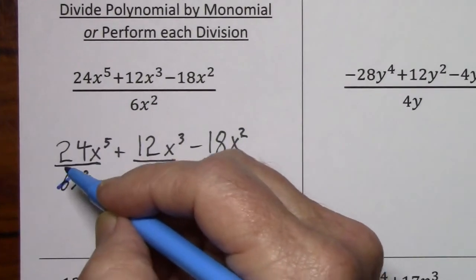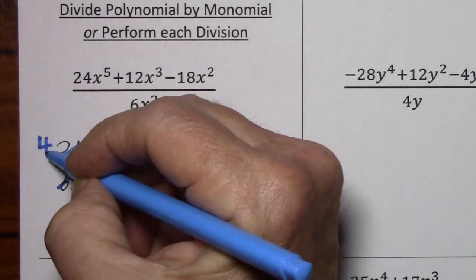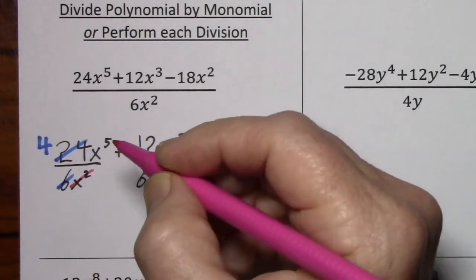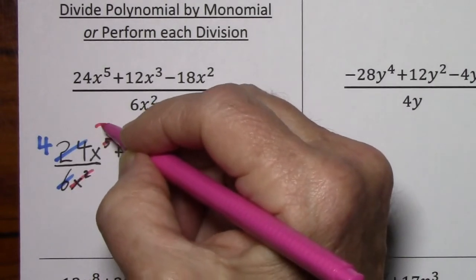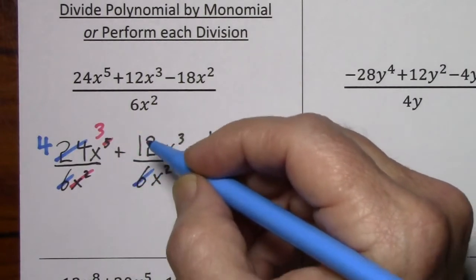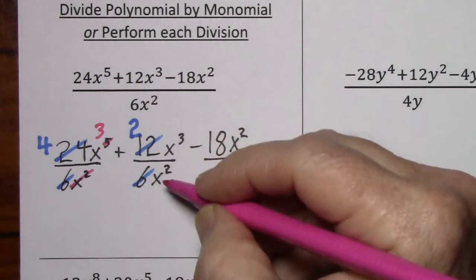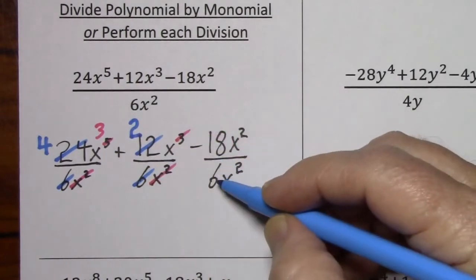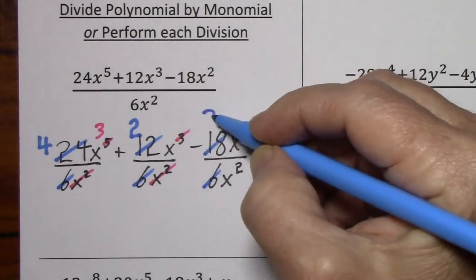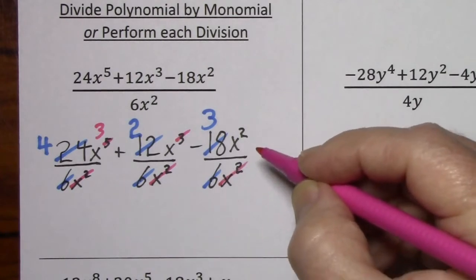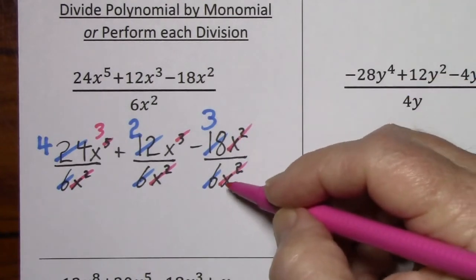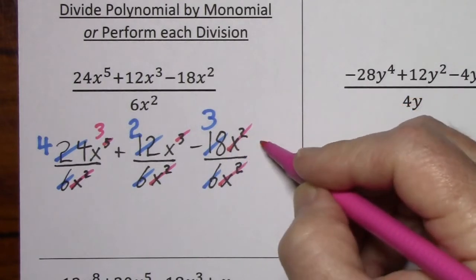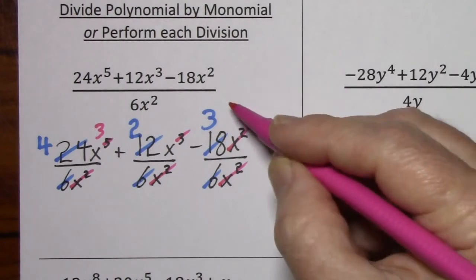Basically, we'll divide by 6 and divide by 6. For the x's, cross out x squared and subtract 2 from 5. For the next fraction, divide by 6, divide by 6. For the x's, cross out x squared, subtract 2. For the third fraction, divide by 6, divide by 6. These x's essentially cancel out — divide by x squared, you get 1. Normally you don't have to write it, as long as there's something else in the numerator.